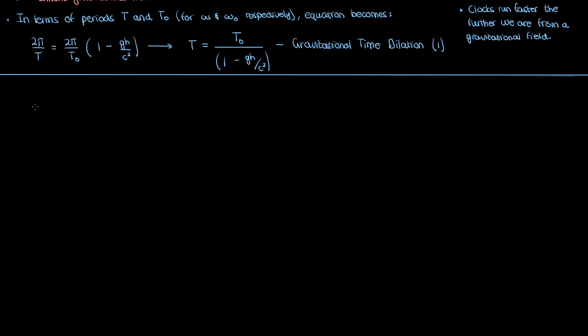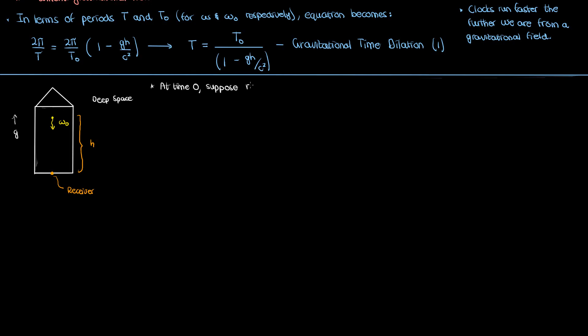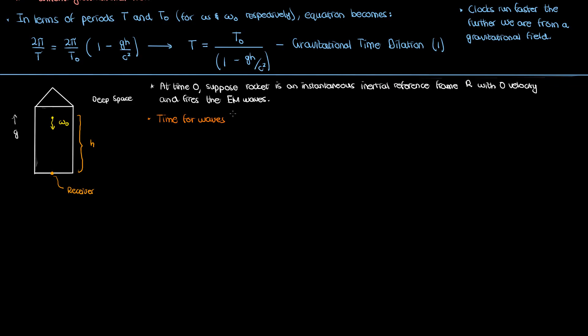There's also an alternative derivation of gravitational redshift and time dilation. Suppose again I have this accelerating rocket, but now the source is at the top and the receiver is at the bottom. They're still separated by vertical separation H, and the source fires EM waves at angular frequency omega naught in its own rest frame. The instantaneous reference frame of the source is R at time zero, and the velocity of the rocket ship is zero according to R. When the source fires the EM wave, it reaches the receiver at time T1, which is again H over C.